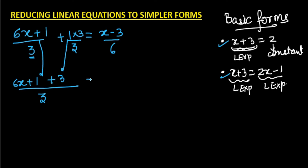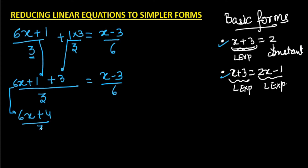The right-hand side is (x − 3)/6. Combining the constants 1 and 3, we get (6x + 4)/3 = (x − 3)/6.